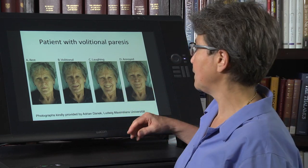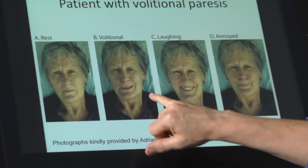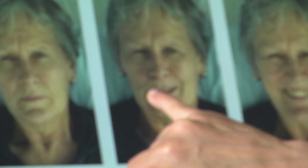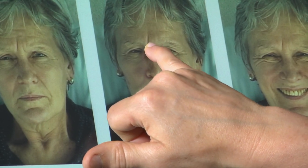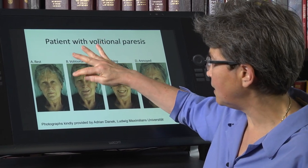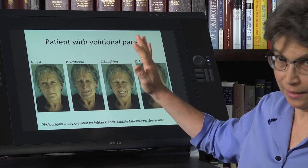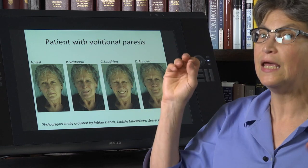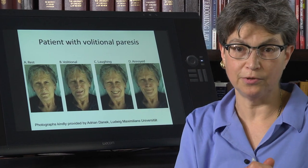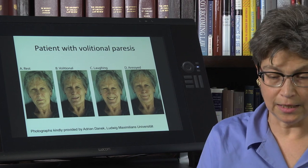Looking at the volitional smile, the mouth goes up on the left but not on the right — yet the forehead on the right is contracting. This is a big difference between peripheral and central control of facial expressions. The control of the top half of the face is bilateral and is basically never damaged by central lesions, whereas the lower half of the face is controlled only contralaterally and is what gets damaged. We'll go through this about five different ways because it's something you have to learn.